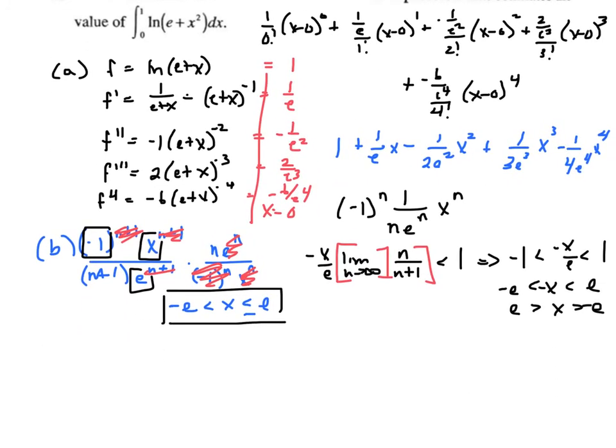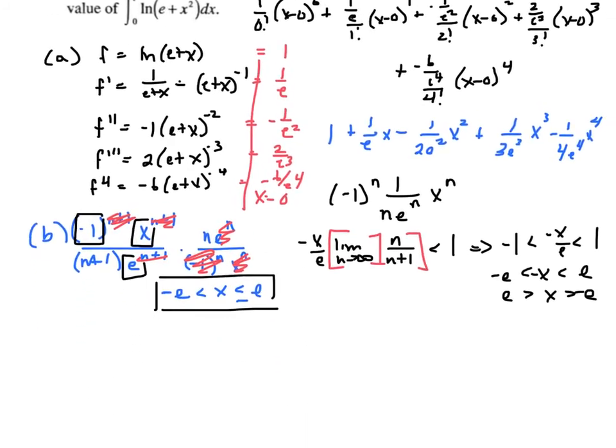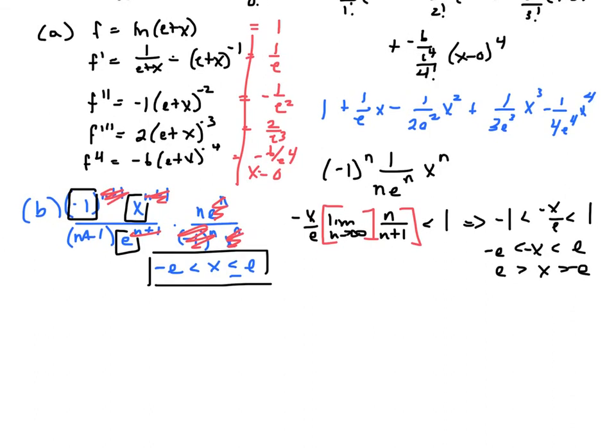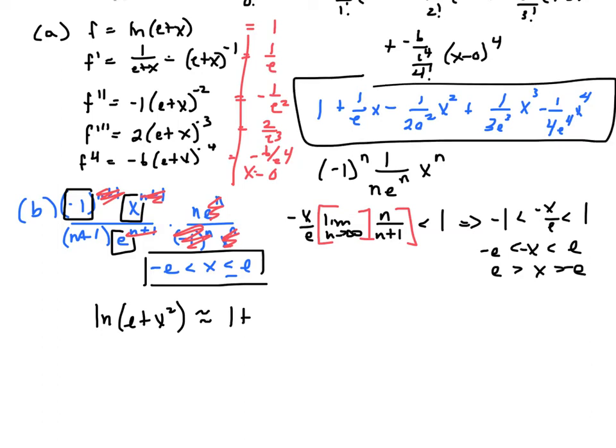Instead of x, every time we had an x, it would become x squared. So the natural log of e plus x squared would be approximated by 1 plus 1 over e x squared minus 1 over 2 e squared x squared squared. And they said only use the first three terms.